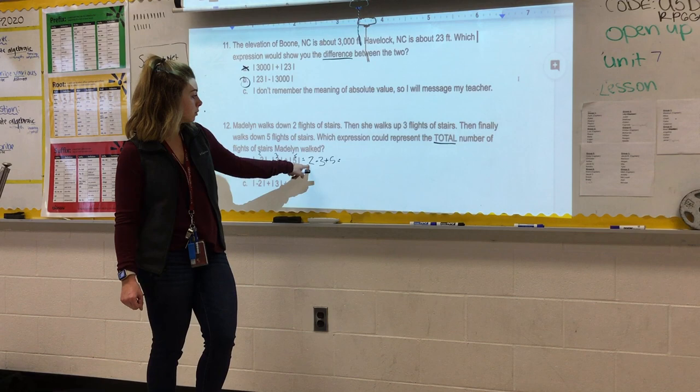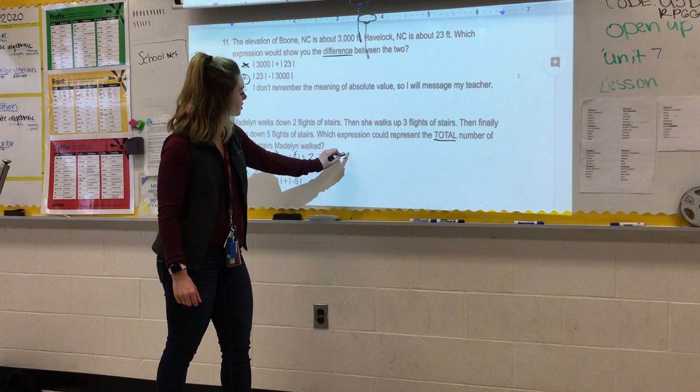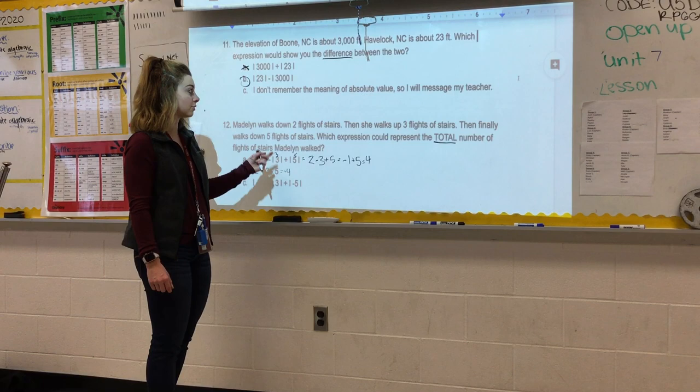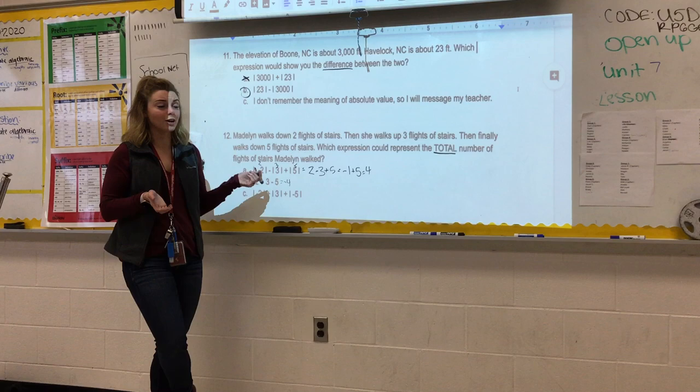So we have absolute value of negative two, which is two minus three plus five. And if we solve this, two minus three or positive two combined with negative three is going to give us negative one plus five, which would give us that she only walked four flights of stairs. But if you think about that, if you're like Madeline, you only walked four flights of stairs, and she'd be like, oh no, I walked way more stairs than four. So A could not be your answer.